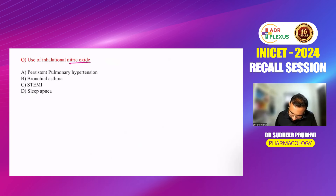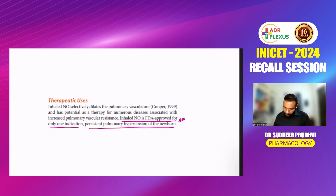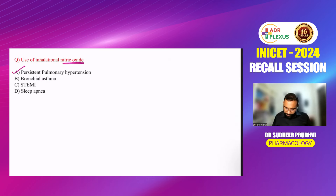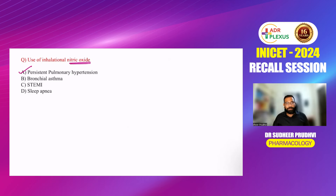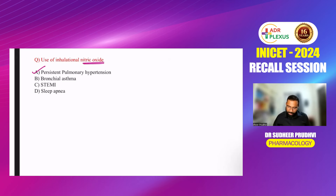Inhalational nitric oxide has FDA approval for only one indication: persistent pulmonary hypertension. That covers all 24 questions from the pharmacology recall session. If any question is missing or if there are errors in questions or options (since these are based on student recall), please let us know in the comments and we will try to rectify them. Thank you so much.